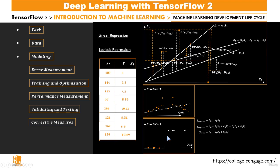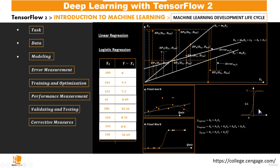Now let's take a look at a classification problem where students with a mark above a certain threshold are considered to have passed and students below that threshold are considered to have failed. For this we need a different kind of function — not just a linear one. We need a function where all values below the threshold map to zero (fail) and all values above the threshold map to one (pass).